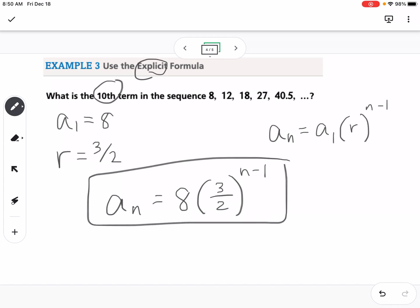If we want to find the tenth term, we're finding a subscript 10. That means we replace n with 10: 8 times 3 over 2 to the 10 minus 1 power. I would suggest 10 minus 1 is easy math to do in your head, so type 8 parentheses 3 over 2 raised to – that caret key tells you you're raising to a power – and then put 9. If we do that, we get 307.546875, so that would be our tenth term.